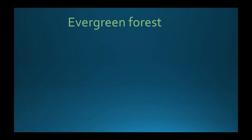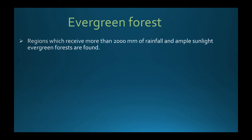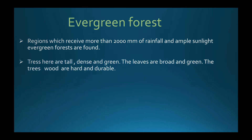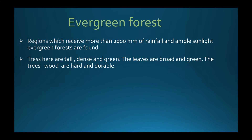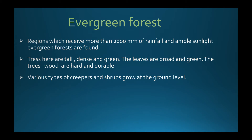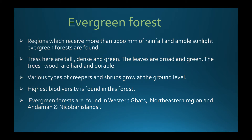Regions which receive more than 2,000 millimeters of rainfall and ample sunlight have evergreen forests. Trees here are tall, dense and green; the leaves are broad and the wood is hard and durable. Various types of creepers and shrubs grow at the ground level, taking support of the trees. They are called evergreen because the trees never shed their leaves. Highest biodiversity is found in these forests, which are located in the Western Ghats, north-eastern regions, and Andaman and Nicobar Islands.